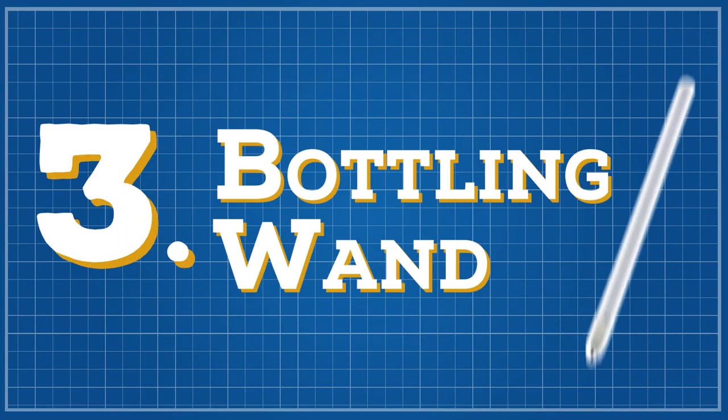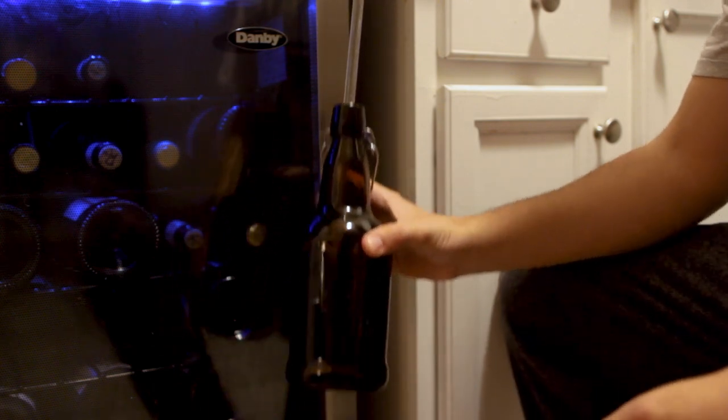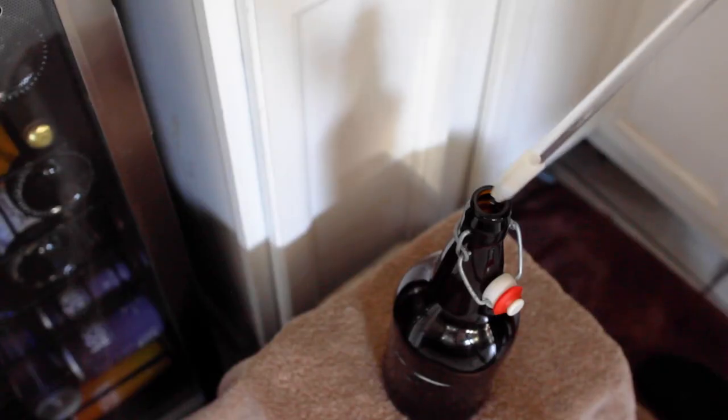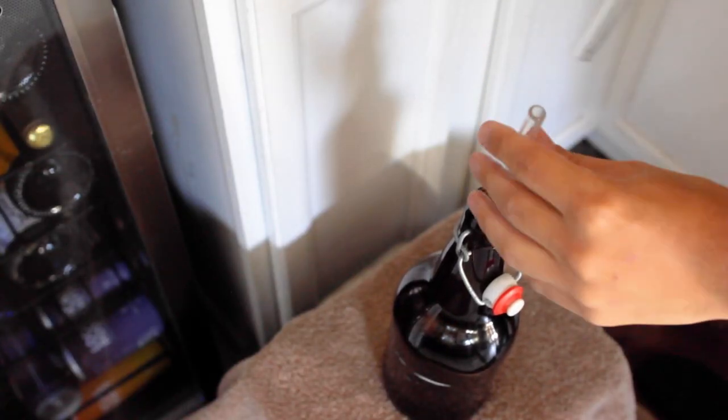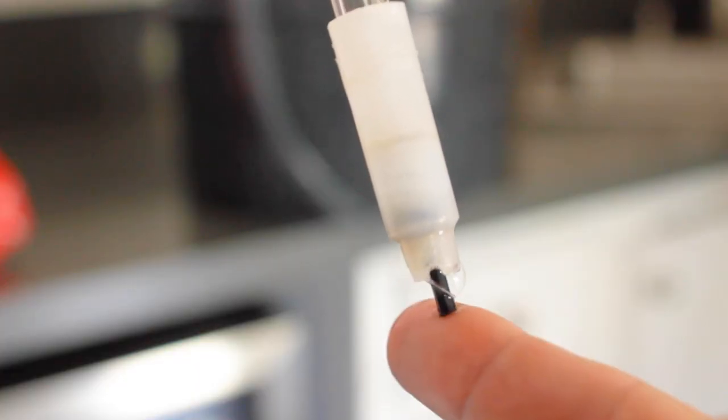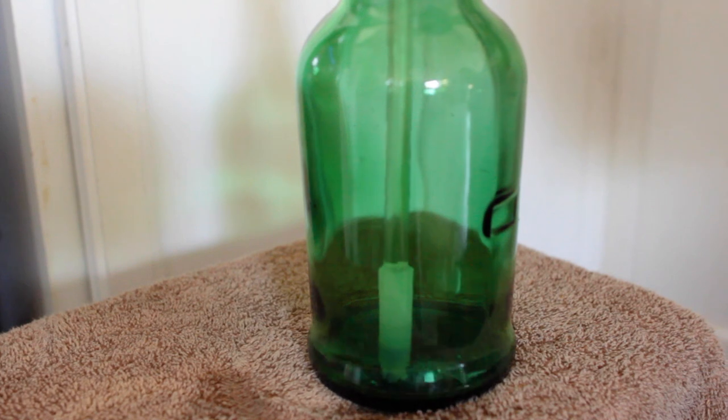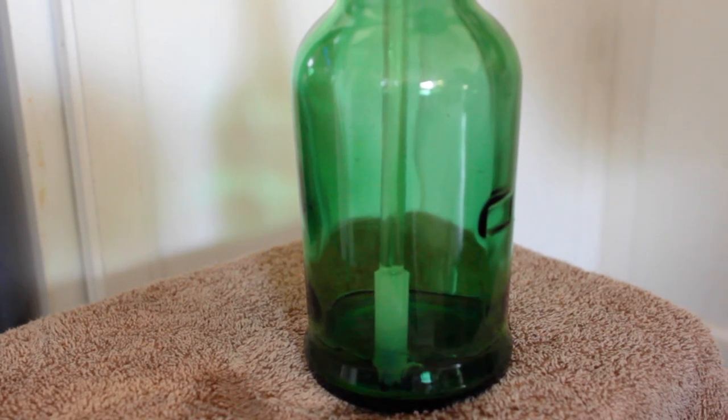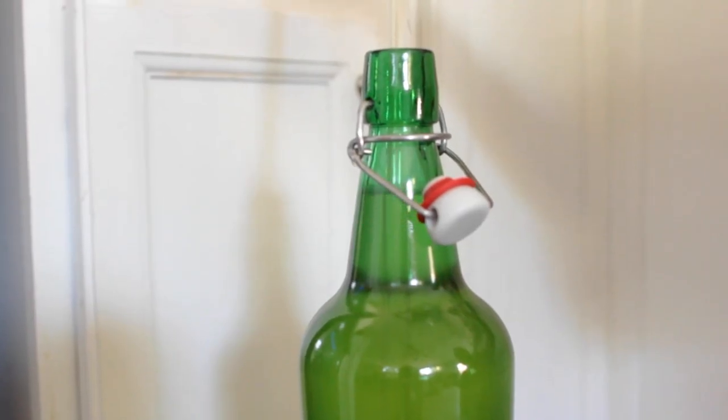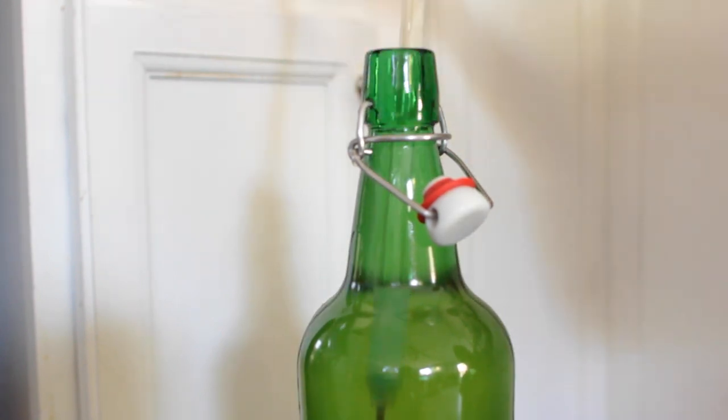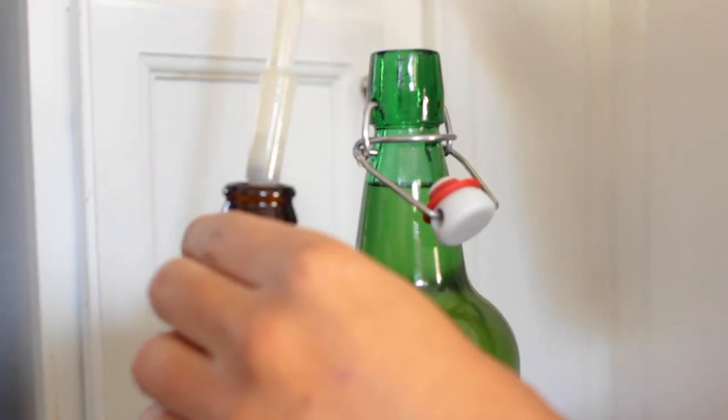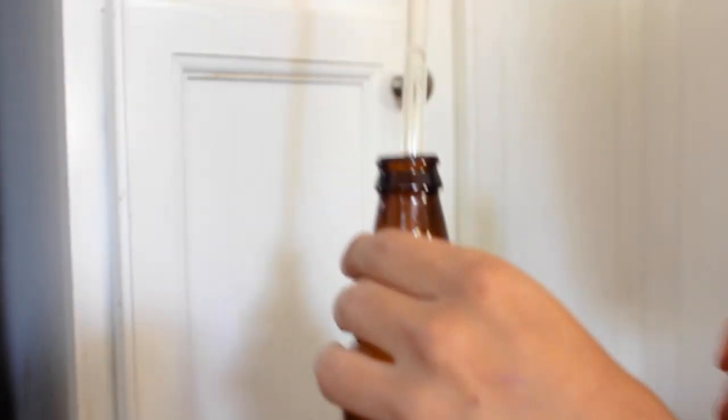Number three, bottling wand. A bottling wand might be one of the most underrated brewing tools. The way it works is that there's a long hard tubing and a spring activated valve at the bottom. As you press down on the valve it opens and allows liquid to flow through. Then as soon as you release the valve it instantly stops thanks to the spring. And lastly, as you pull the wand out it leaves the perfect amount of headspace in the bottle. No more pinching the line or trying to stop the siphon—it makes bottling easy.